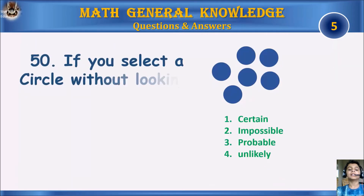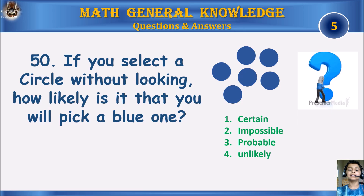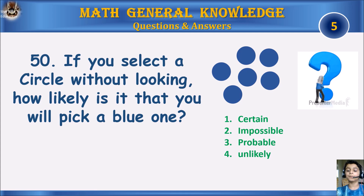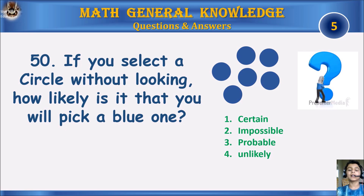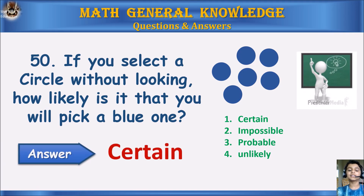If you select a circle without looking, how likely is it that you will pick a blue one? 1) Certain 2) Impossible 3) Probable 4) Unlikely. Your time starts. Answer: Certain.